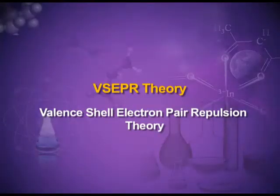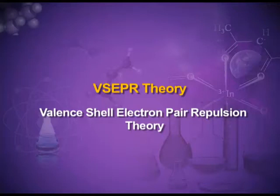These molecules also have some shape or other. Sidgwick and Powell suggested the Valence Shell Electron Pair Repulsion theory to explain the shape of different molecules. This is also known as VSEPR theory. Today we will study about Valence Shell Electron Pair Repulsion theory. First of all, let us study about the assumptions.